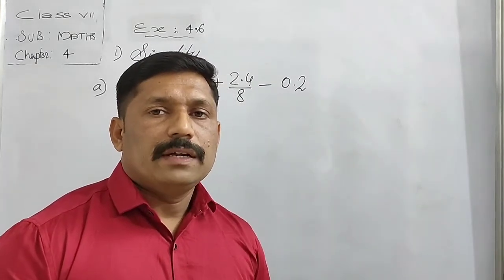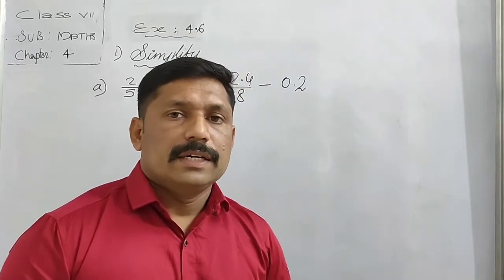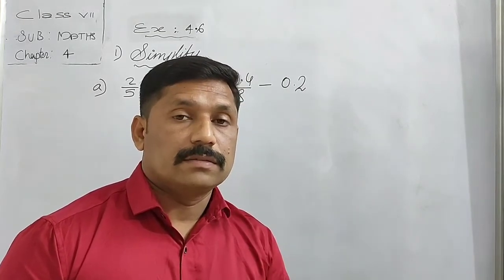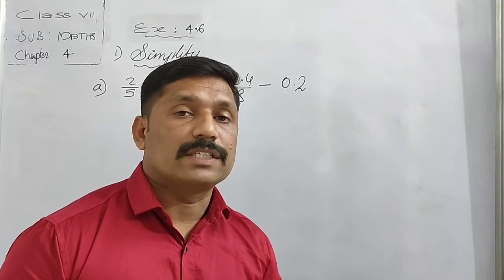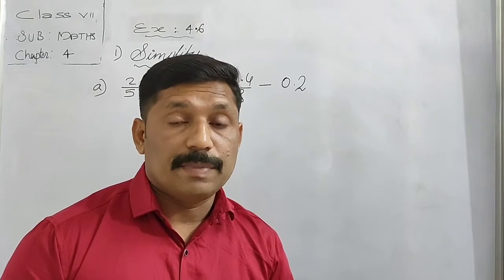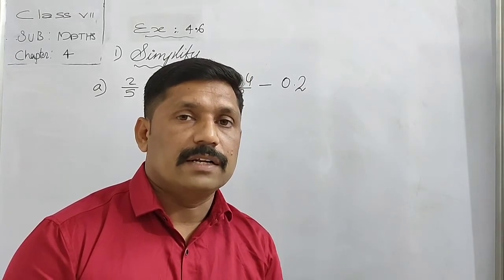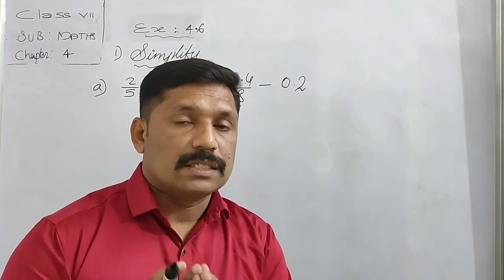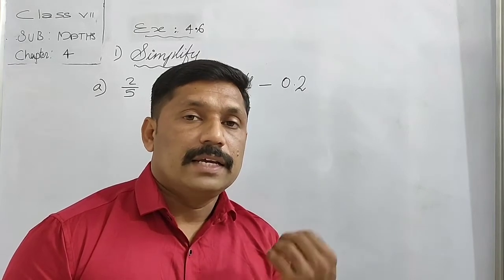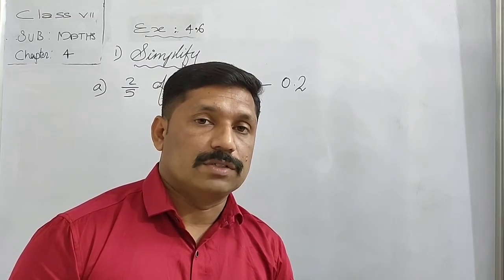Children, now we are solving the next exercise that is about simplification. You know that in order to simplify numbers, we follow an order called BODMAS. In simplification, there will be brackets, the 'of' function, addition, subtraction, multiplication, and division. All these four operations along with brackets are involved in simplification questions. As it is decimal numbers, you have to take care, because there is a chance for making mistakes.